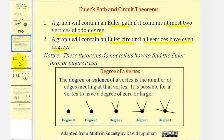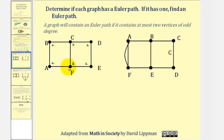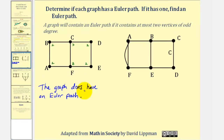Let's look at some examples. We want to determine if each graph has an Euler path, and if it has one, we want to find it. We'll check if there are at most two vertices of odd degree. In our first graph, vertex B has degree two, as do vertices A, E, and D. But vertices C and F have degree three. It does satisfy the requirement — two vertices of odd degree — so the graph does have an Euler path.